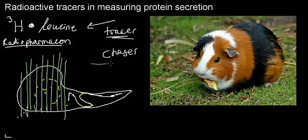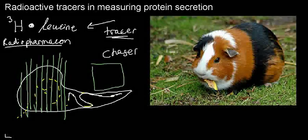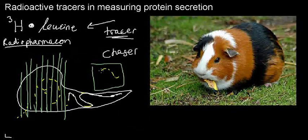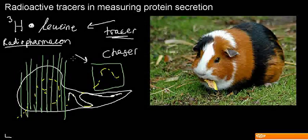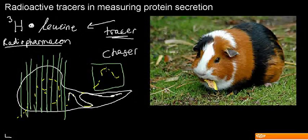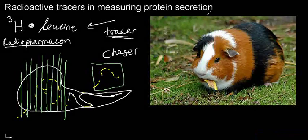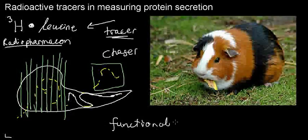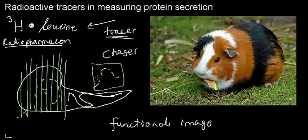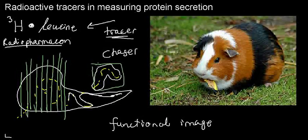We can look at a layer and see where my radiopharmacon went and how it was secreted. I can follow its radioactive emission and get a nice image of how this protein was secreted. This is called a functional image — because I get an idea of how something is working properly in the body. I'm not taking a picture; I'm only getting this emission.